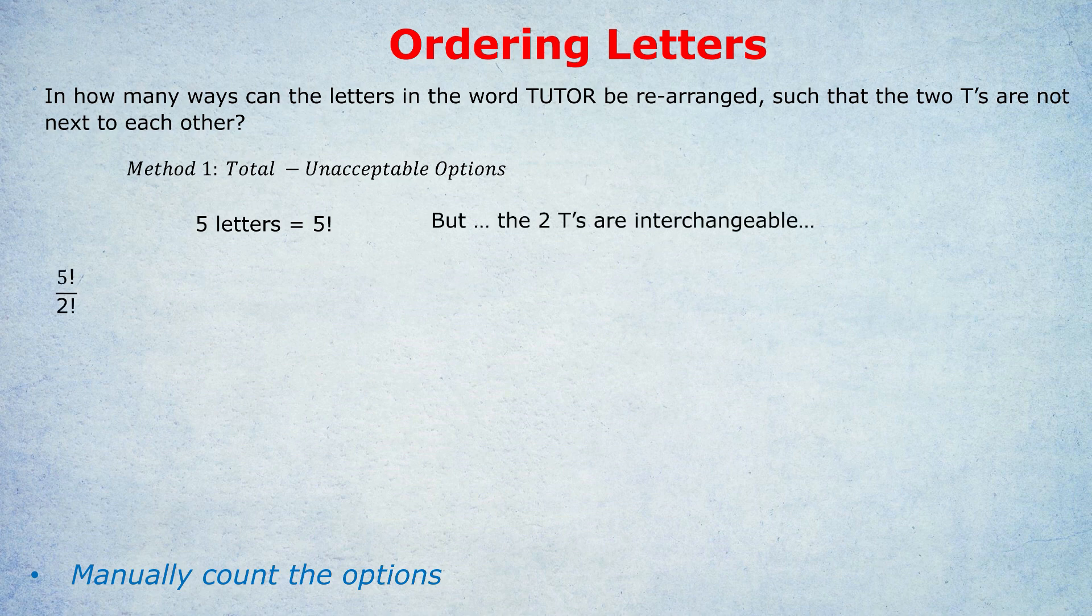This gives us five times four times three which is I think 60. So there are 60 arrangements, unique arrangements I should say, of the word TUTOR. And now we're going to subtract all the unacceptable options. Well the condition they gave us was that those two T's can't be next to each other. So those are the unacceptable options. So we're going to manually, as I've written at the bottom, count out those unacceptable options.